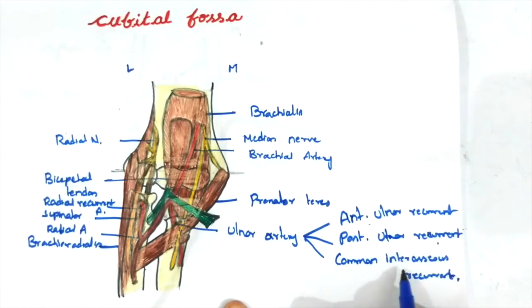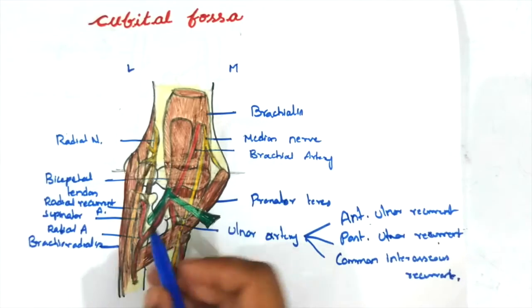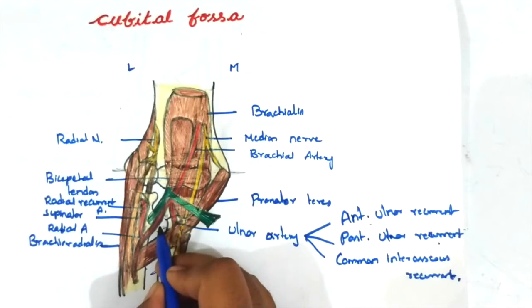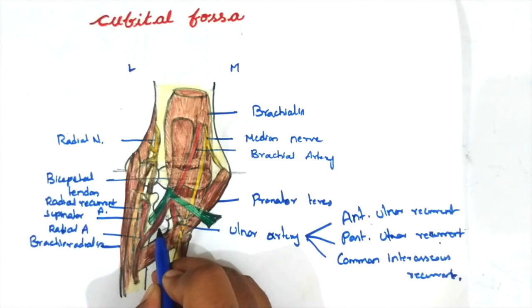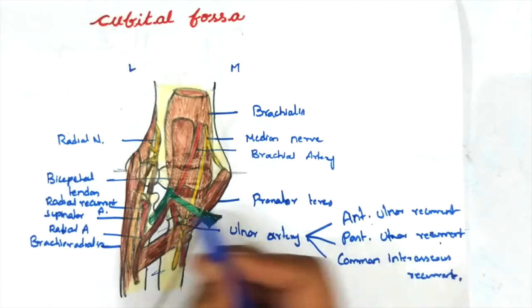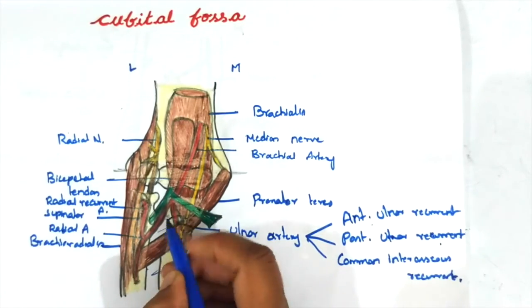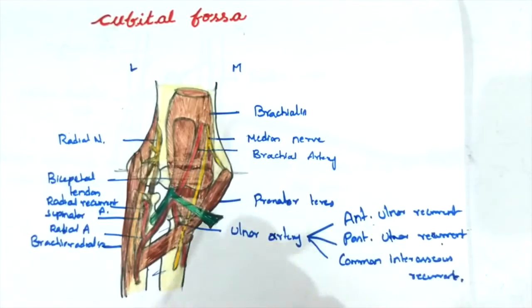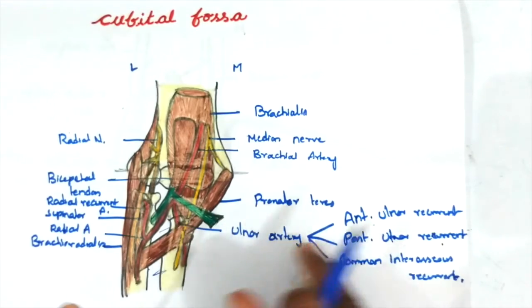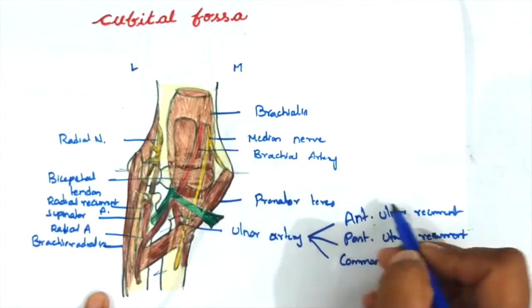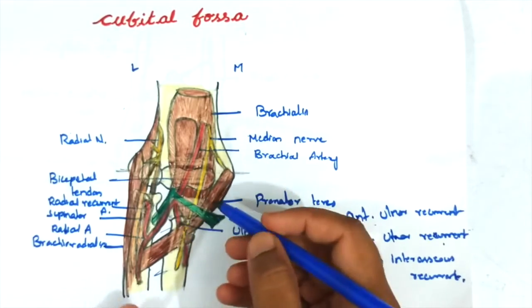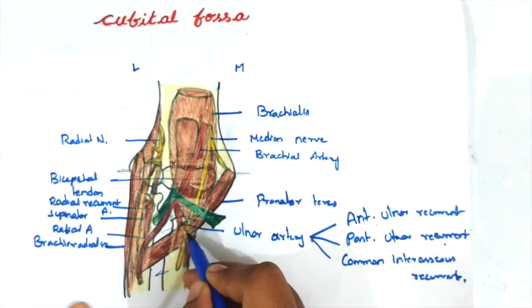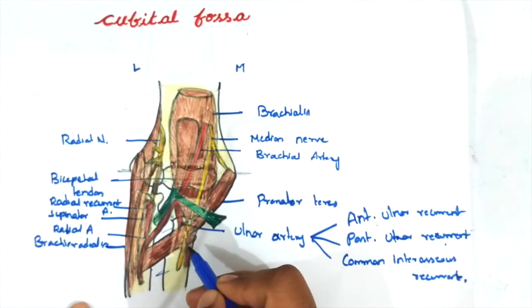The common interosseous artery passes between the radius and ulna bones where the interosseous membrane is located. At the superior margin of the interosseous membrane, the common interosseous artery divides into the anterior interosseous artery and the posterior interosseous artery, which passes behind the interosseous membrane.